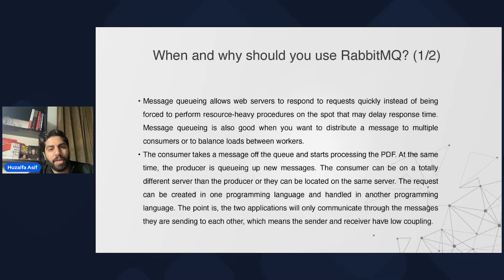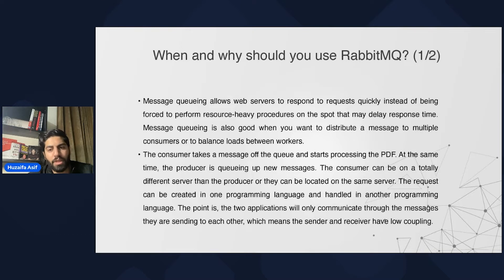When and why should we use RabbitMQ? Message queuing allows web servers to respond to requests quickly instead of being forced to perform resource-heavy procedures on the spot that may delay response time. Message queuing is also good when you want to dispatch a message to multiple consumers or to load balance between various workers. The consumer takes a message off the queue and starts processing the PDF, while at the same time the producer is queuing up new messages. The consumer can be on a totally different server and can be created with a different programming language.